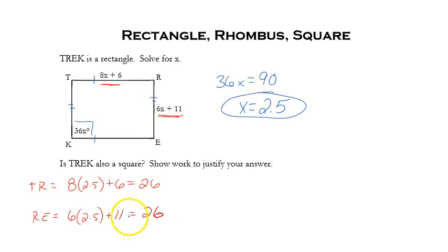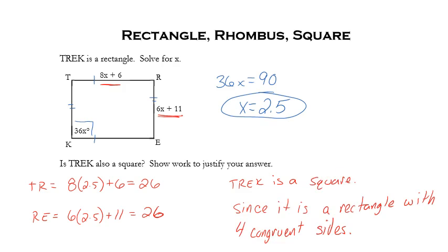now and only now can I assume that yes, TREK is a square. And we know that because it is a rectangle that was given to us with four congruent sides, that we calculated because we knew x was 2.5.